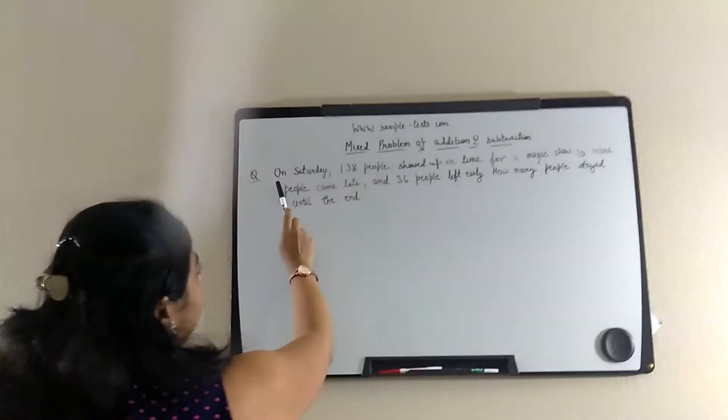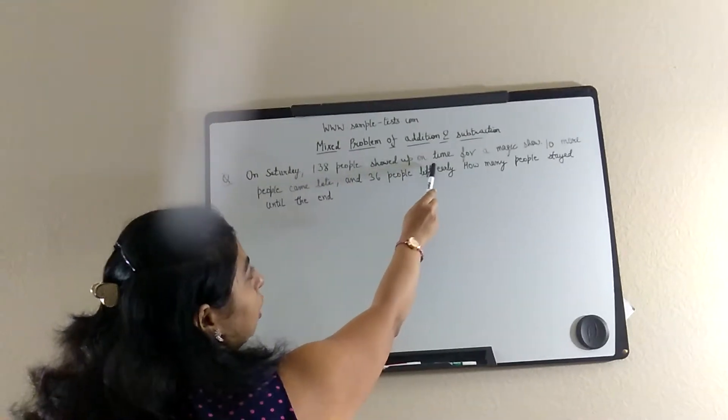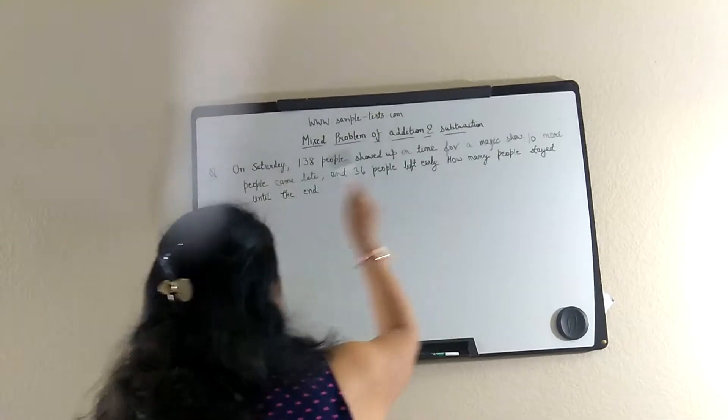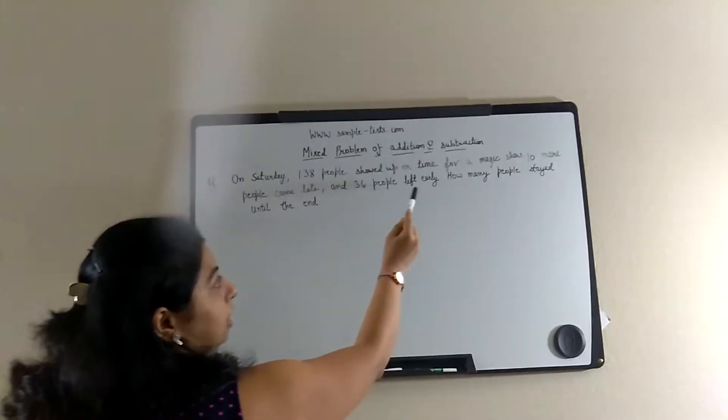here is a question. On Saturday, 138 people showed up on time for a magic show. 10 more people came late and 36 people left early.